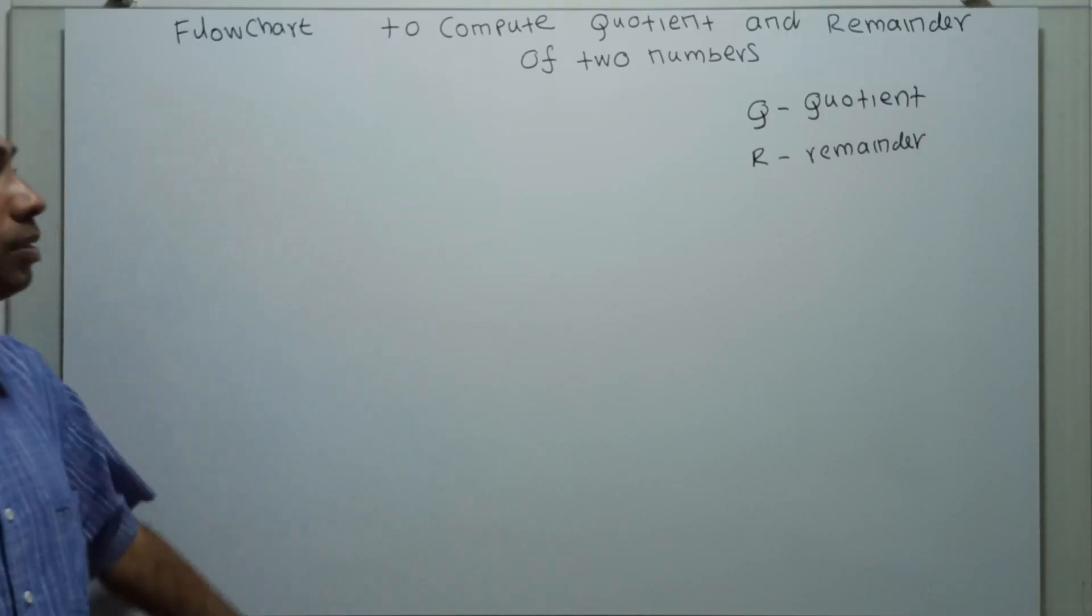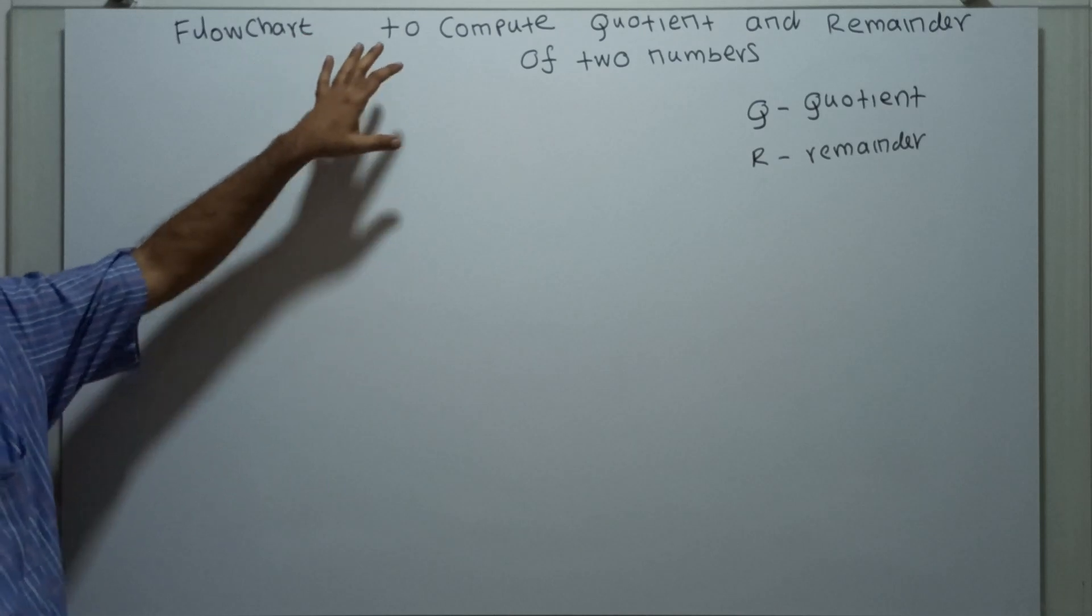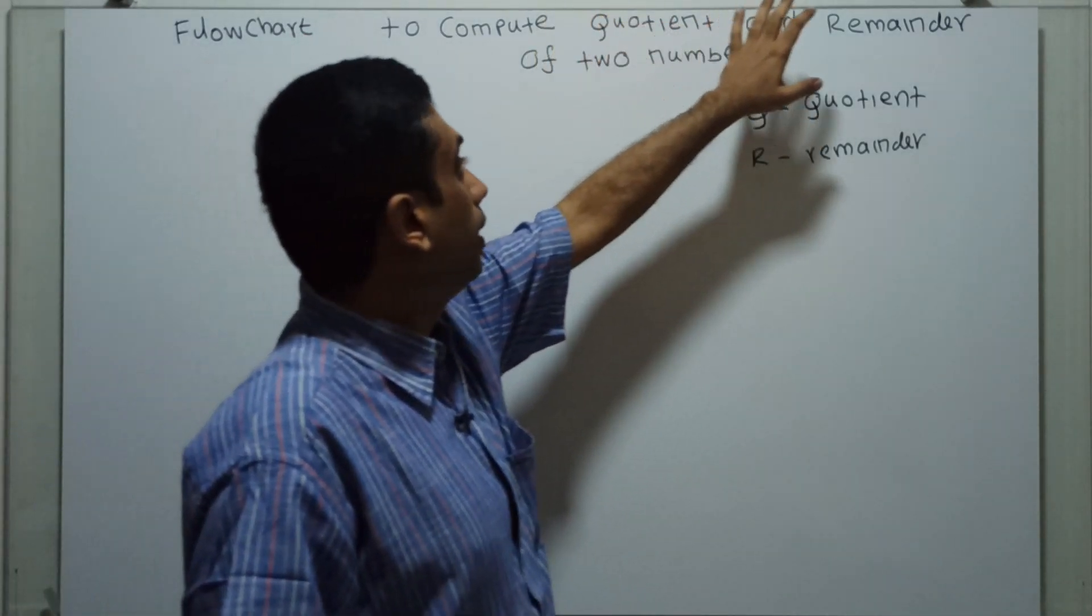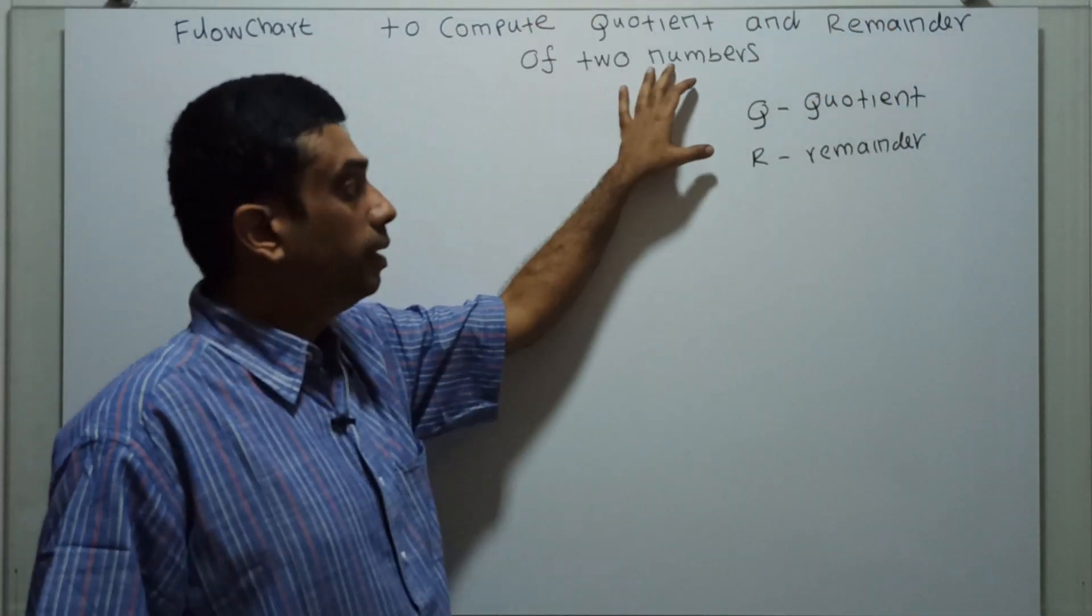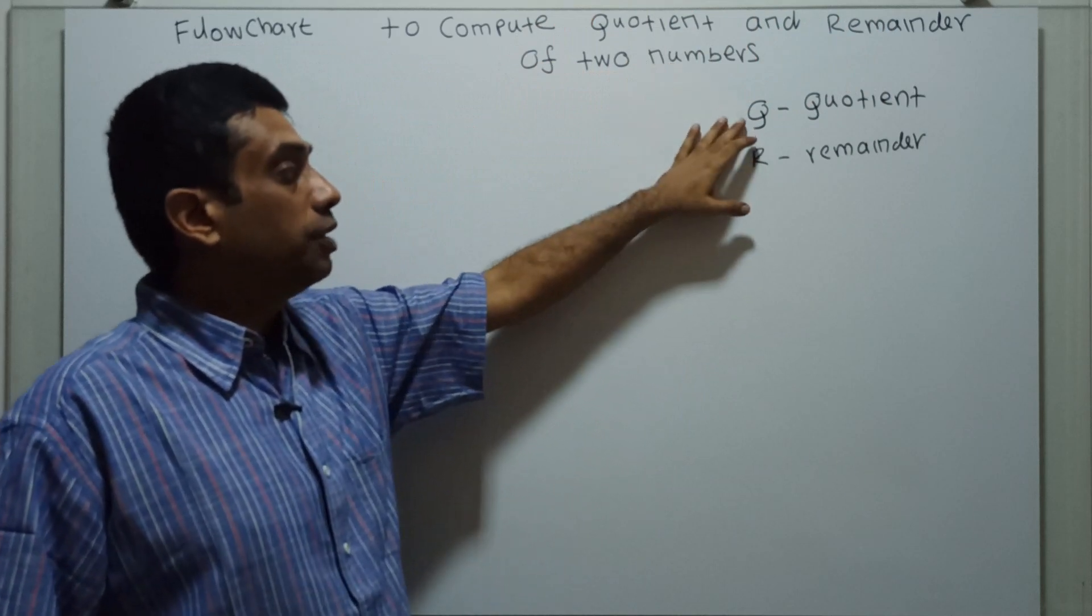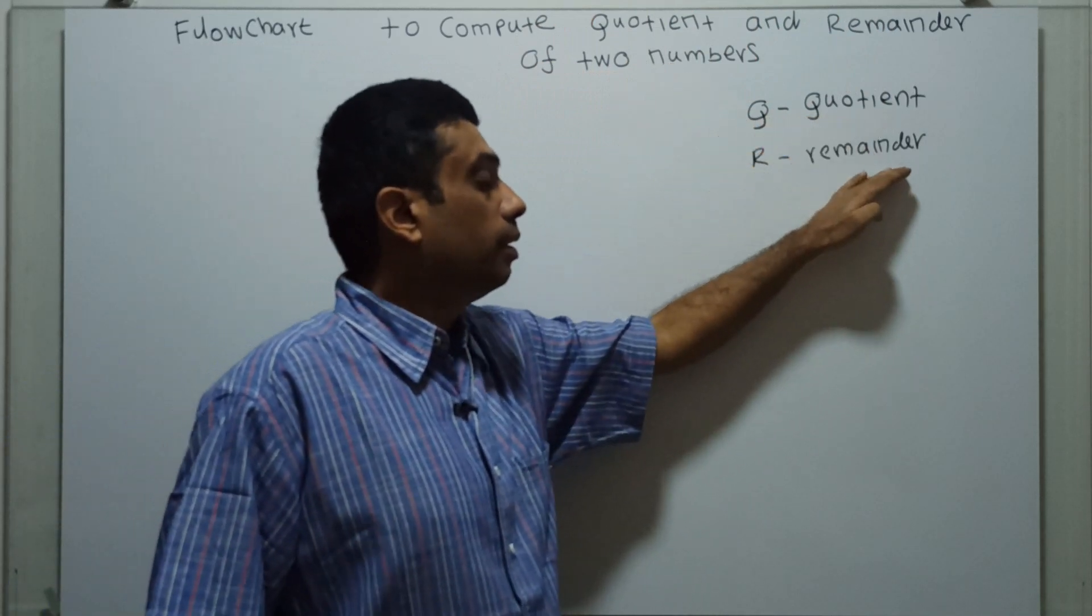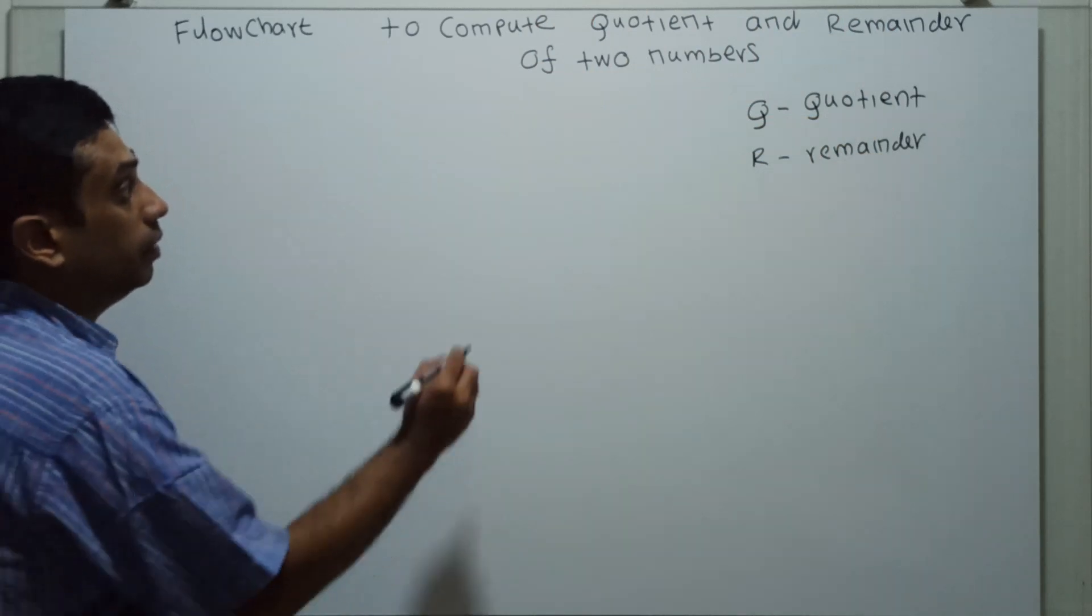Hello friends, we are going to draw a flowchart to compute the quotient and the remainder of given two numbers. I am using a variable q for quotient and r for remainder. We will draw the flowchart.